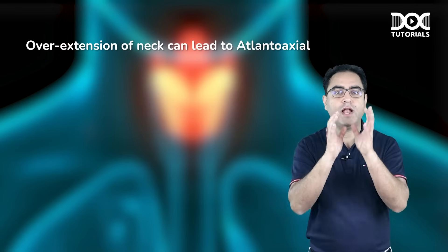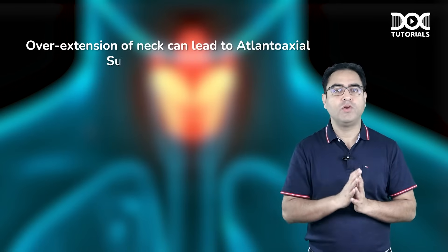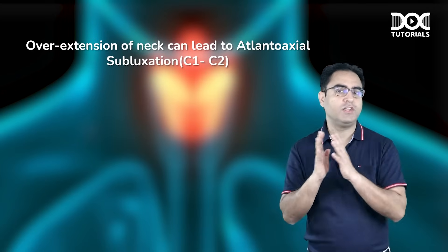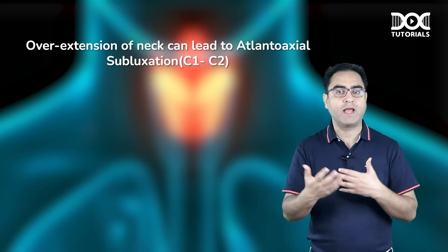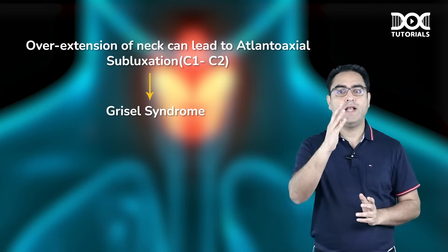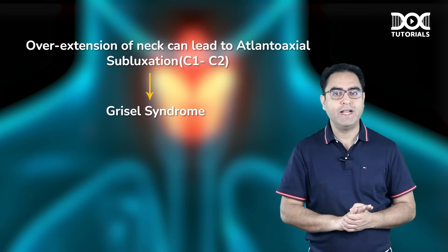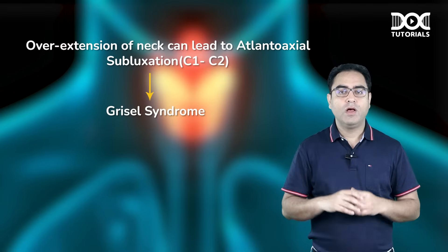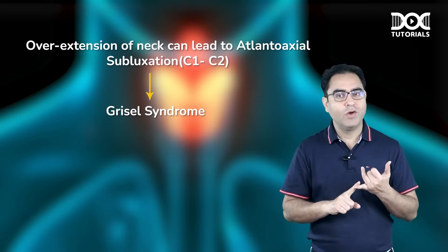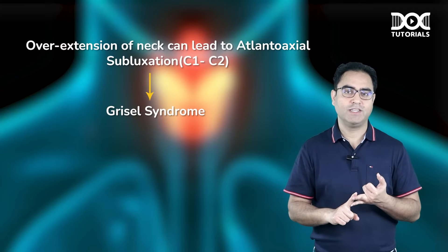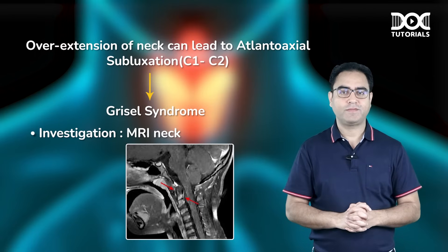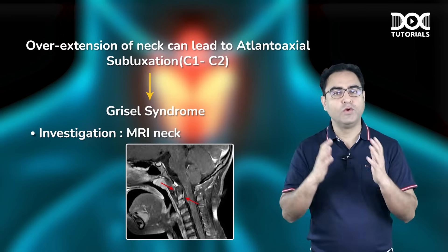Overextension of the neck can lead to accidental subluxation of C1–C2 vertebra. This atlanto-axial subluxation due to overextension in adenoid/tonsil surgery is called Grissel syndrome. Suspicion arises when the mother says the child has neck pain or neck spasm after surgery. Investigation: MRI neck. An urgent neurosurgery consultation is required.